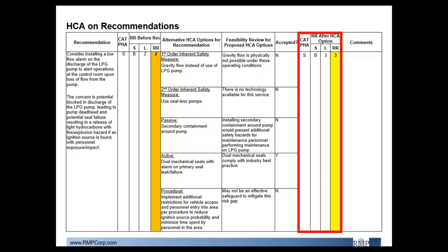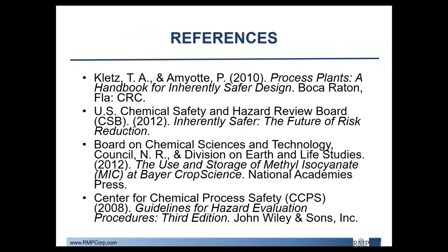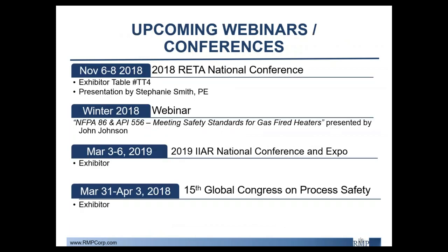That concludes our webinar on incorporating inherently safer design into HCAs. Three methods were reviewed: unit-wide HCA checklists, evaluating high-severity HAZOP scenarios, and performing HCAs on PHA or SPA recommendations. References used to create this presentation are listed here. Upcoming events include the 2018 RITA National Conference in November in Dallas, Texas, where Stephanie Smith and Ryan Bray will be presenting. A winter webinar on NFPA and API standards for gas-fired heaters will be presented by John Johnson. RMP will also be present at the 2018 AIR National Conference in March in Phoenix, Arizona, and at the 15th Global Congress on Process Safety in New Orleans.